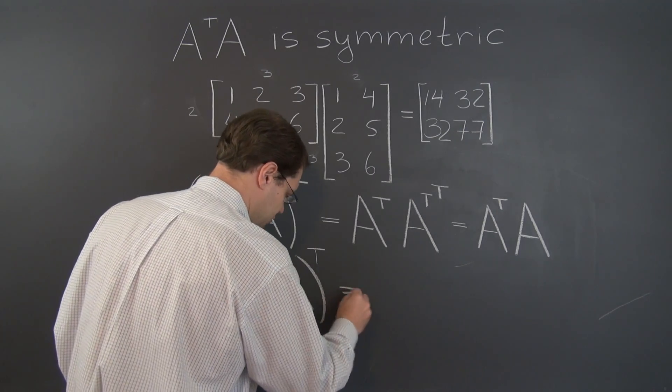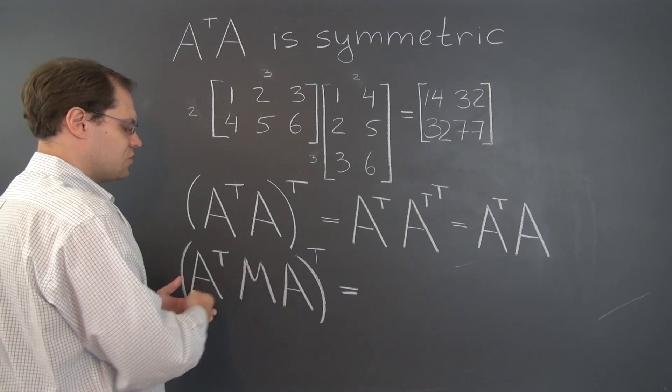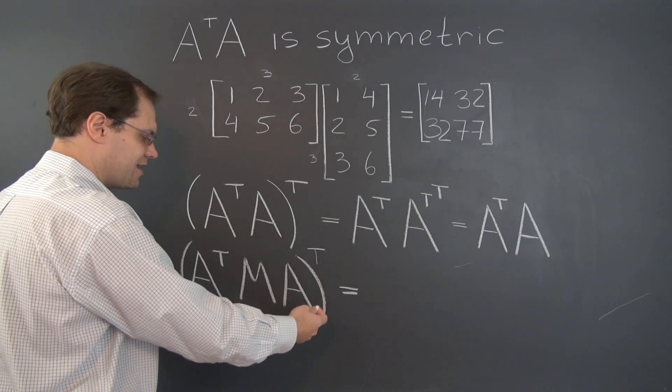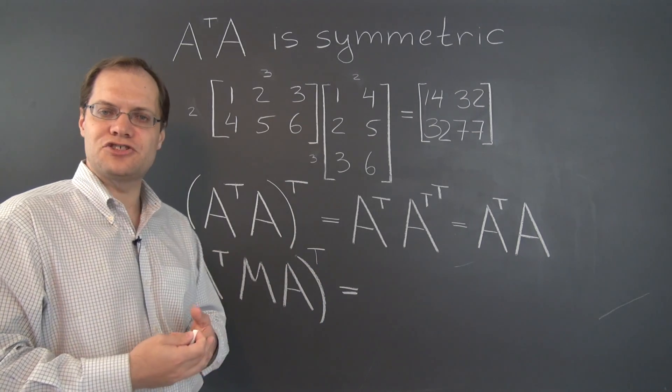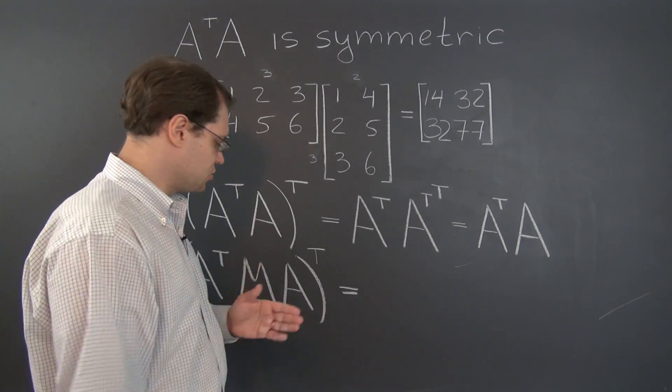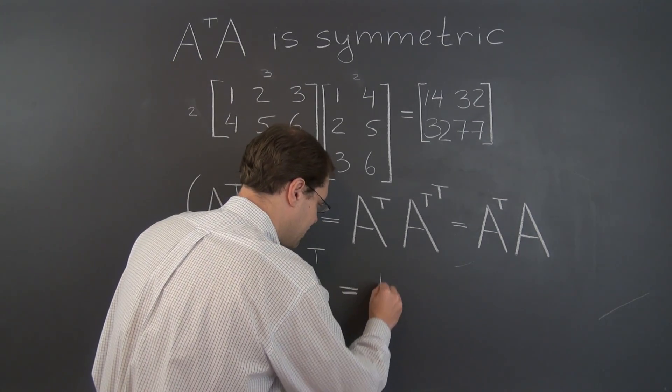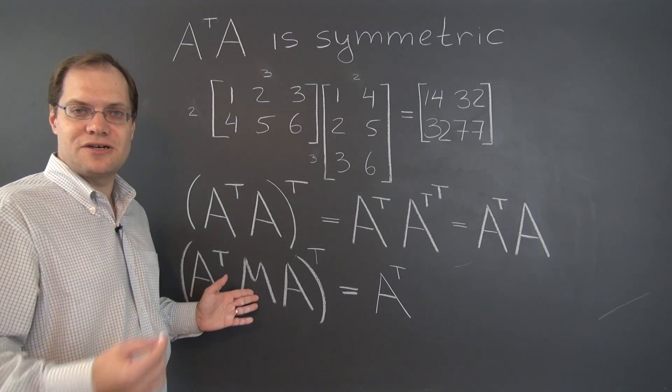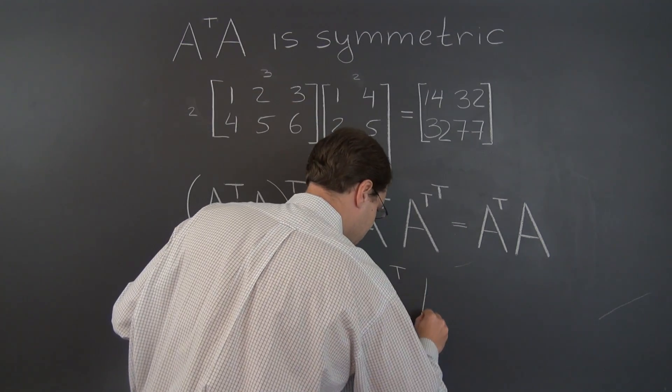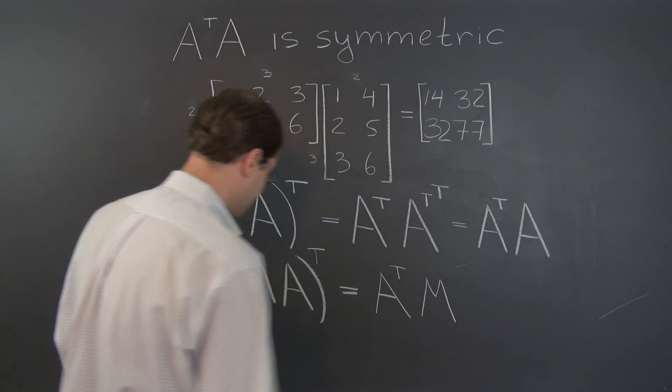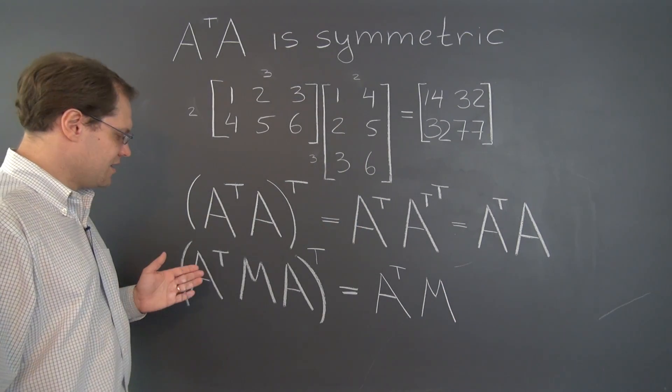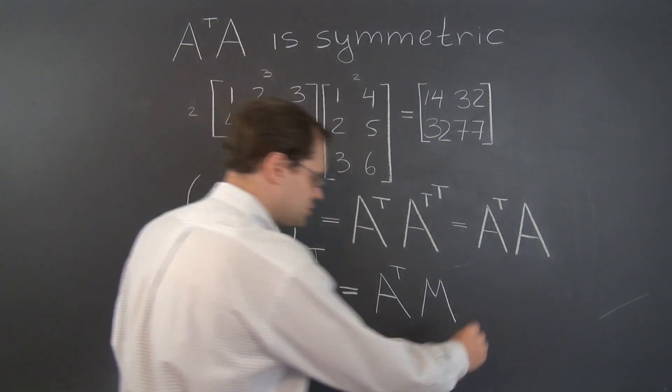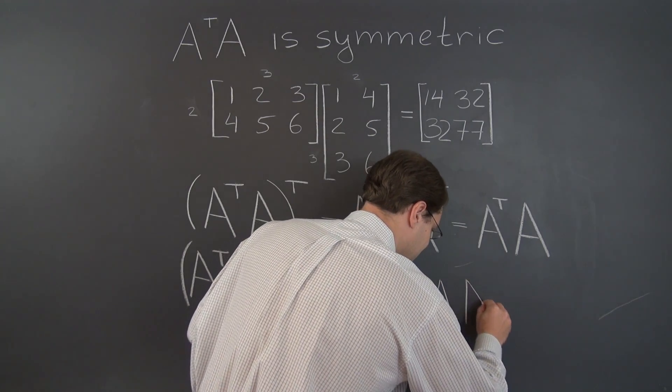So it's a triple product. So the transpose of this product is the product of the individual transposes in the reverse order. So first we'll have A transpose. Second we'll have M transpose. And because M is symmetric, M transpose is M itself. And finally we'll have the transpose of A transpose, which is simply the matrix A itself.